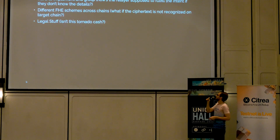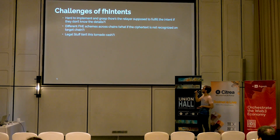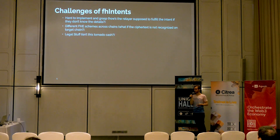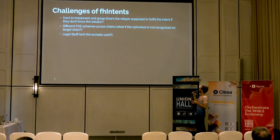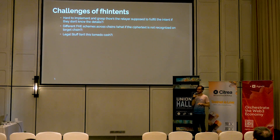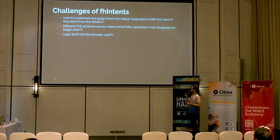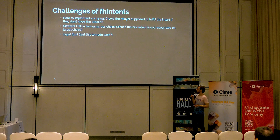There are some challenges of FHE intents. They're hard to implement and grasp — how is the relayer supposed to fulfill the intent if they don't know the details? They have to know the details to fulfill it, but I'll explain this on the diagrams. Another challenge is different FHE schemes across chains — what if the ciphertext is not recognized on the target chain? If one chain uses a different FHE scheme and the other chain supports a different one, those two chains won't recognize each other's encrypted text.